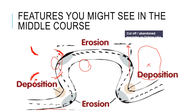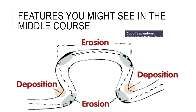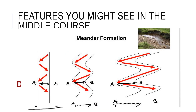Again, exactly the same thing here — it's just another way of looking at the image. You can see where the erosion and the deposition are: deposition is always on the inside, erosion is always on the outside.